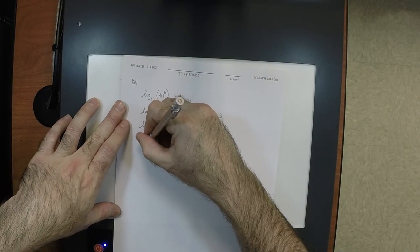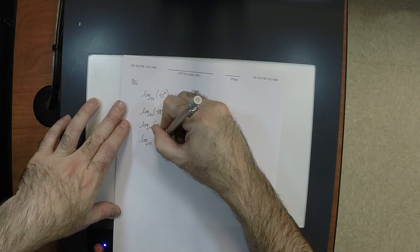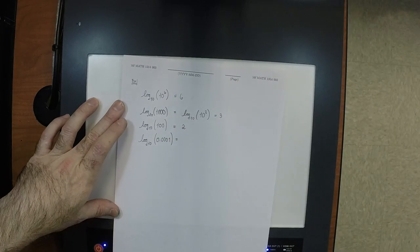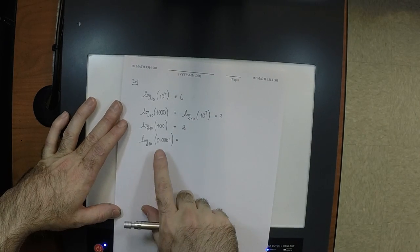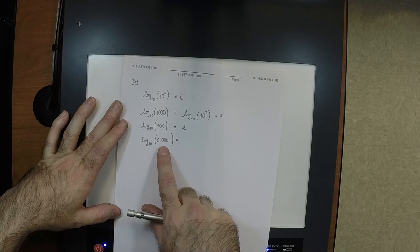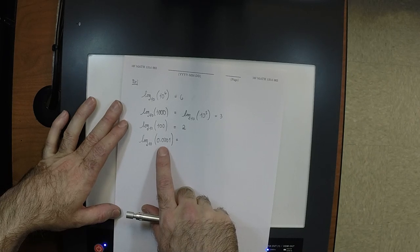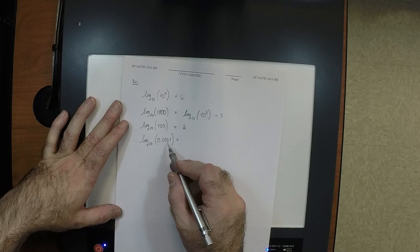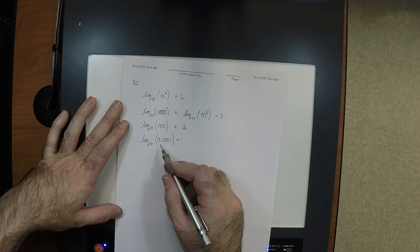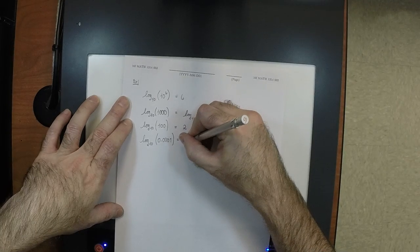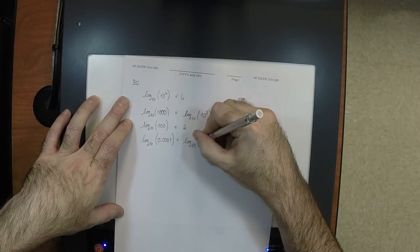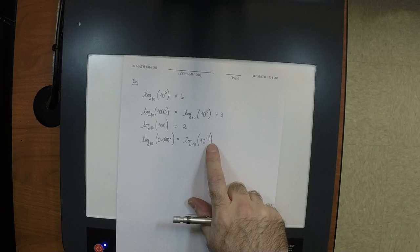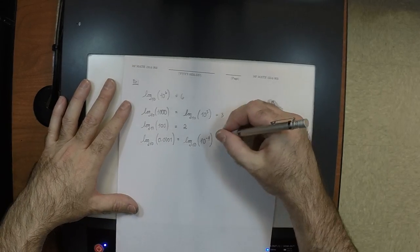How about log base 10 of 0.0001? That's negative 4 — because 0.0001 is 10 to the negative 4. So it's log base 10 of 10 to the exponent negative 4, and we're just getting that negative 4 back.